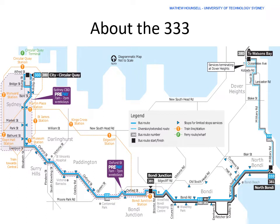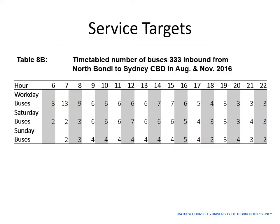In 2016, the 380 and the 333 were running from Circular Quay along Elizabeth Street, then Oxford Street, diverted at Bondi Junction into the interchange, and then returning to Bondi Road before finishing on Campbell Parade at the tram terminus at North Bondi. The 381 follows a slightly different route due to a gradient too high for trams. Table 8B summarises the service targets for the 333 running inbound from North Bondi to the Sydney CBD in August and November 2016, which is what will be analysed in the rest of this video.